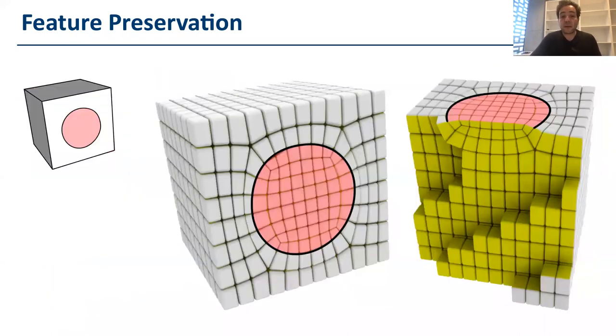Notice that our method also allows to preserve any kind of features, even the ones inserted by the user manually. In this case, this circle has been drawn by the user on the cube, and this feature doesn't necessarily correspond to sharp features or geometric features, but our method can include it and blend it to a nice final hexahedral mesh.